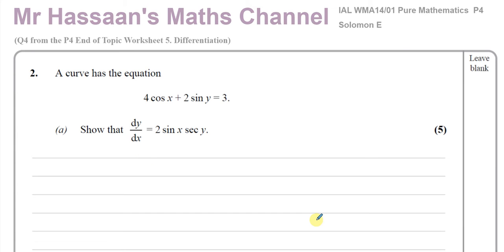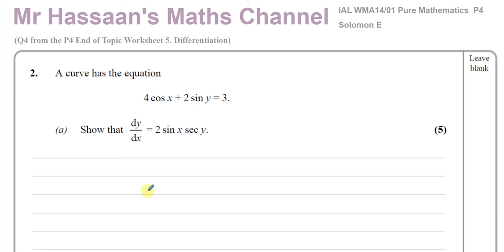This question is about implicit differentiation. You have some things which are in terms of y, and you need to find dy/dx. When you want to differentiate something like this, you're not able to make y the subject of the formula and then find dy/dx in the normal way. So what we need to do is differentiate every term separately with respect to x and find dy/dx for each term separately.